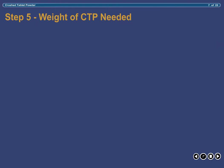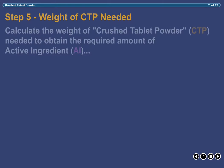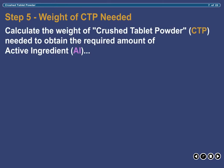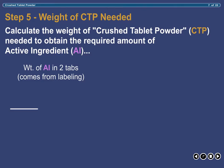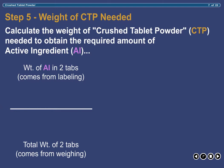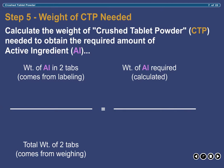Now that we know the amount of active ingredient needed, the amount of active ingredient in two tablets, and the total weight of two tablets, we can use the following formula to calculate the amount of crushed tablet powder that will provide the needed active ingredient. Crushed tablet powder is the refined powder that results when commercially prepared tablets are forcefully triturated in a mortar. Remember that this powder is a combination of active ingredient and excipient, and the goal is to determine how much of that powder contains the precise amount of active ingredient needed.